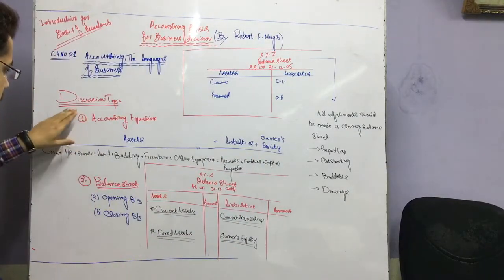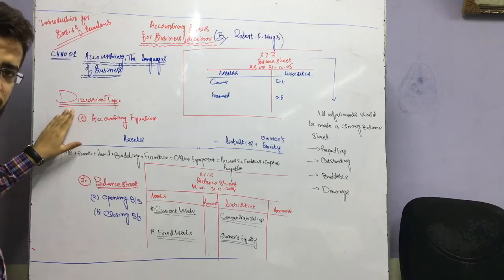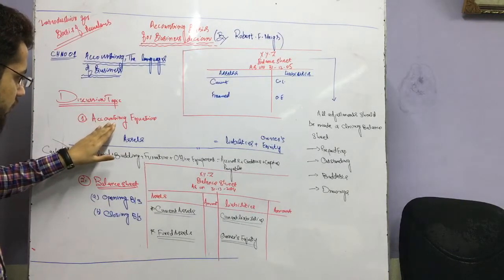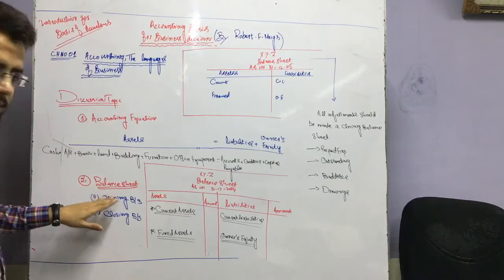First of all we will see that the discussable topics are: first, the topic is Accounting Equation, and the second topic is the Balance Sheet.